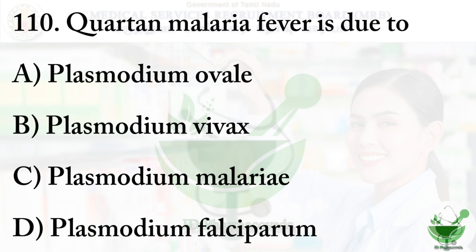Question number 110: Quartan malaria fever is due to — option A – Plasmodium ovale, option B – Plasmodium vivax, option C – Plasmodium malariae, option D – Plasmodium falciparum. The right option is option C – Plasmodium malariae.